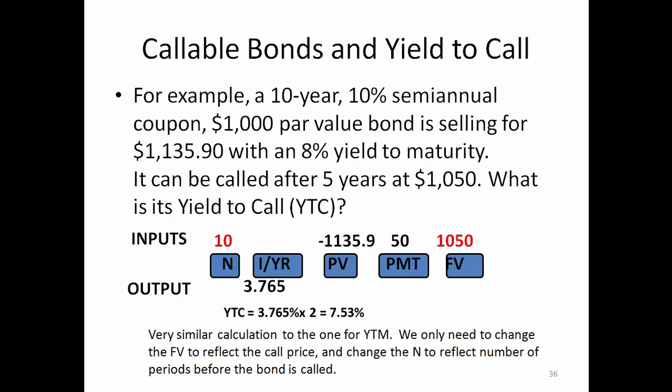A callable bond is a bond that gives the issuer the right to call back the bond before it matures. If that happens, investors cannot hold the bond to maturity. That's why we need to calculate the so-called yield to call.